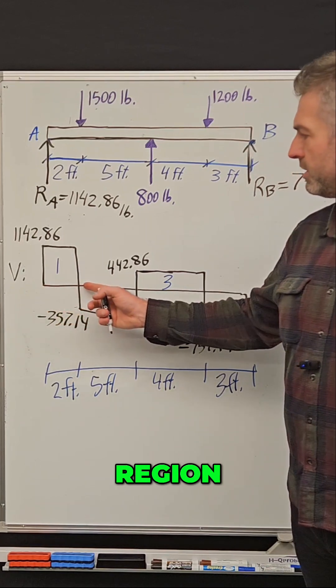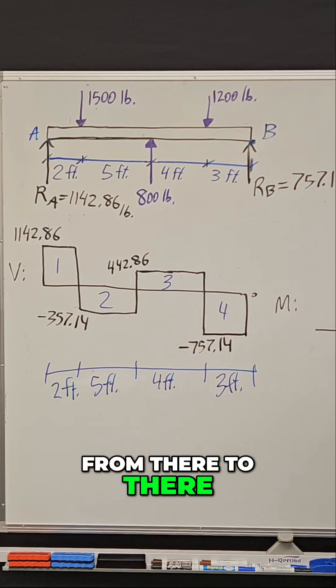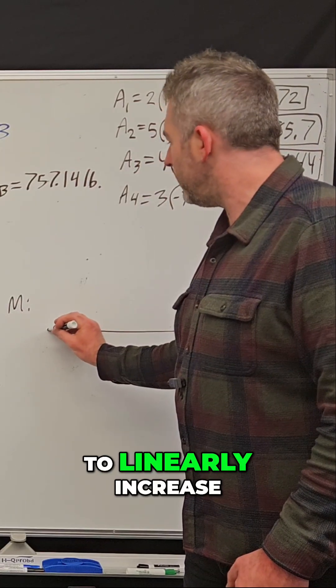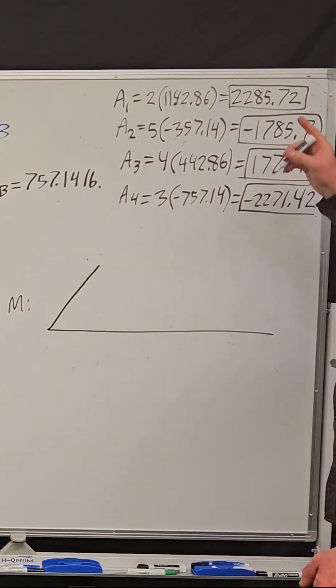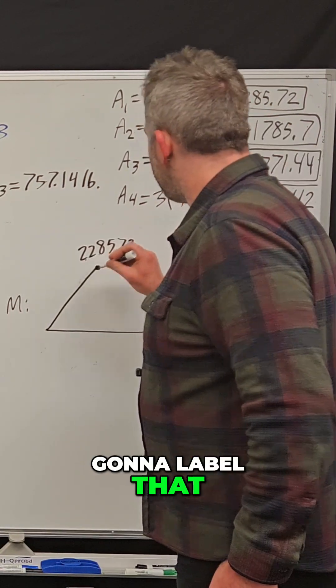For this first two foot region, from there to there, it's going to linearly increase in moment until it reaches that number. So I'm going to label that on my graph.